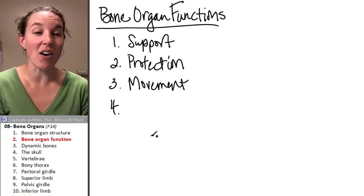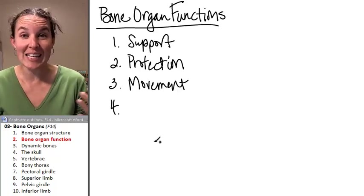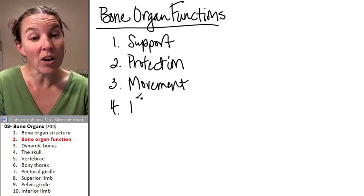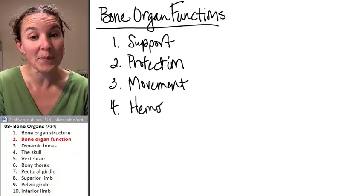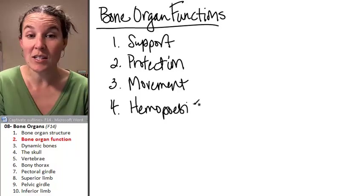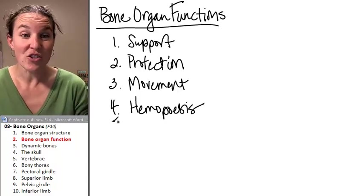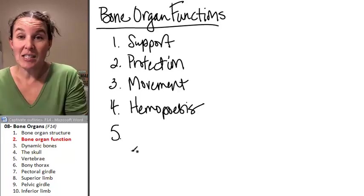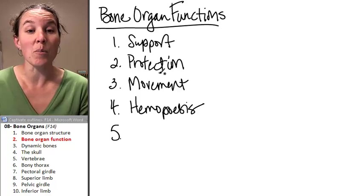Bone organs also, remember what kind of tissue we saw in the medullary cavity, in the bone marrow. They're involved in hemopoiesis, which is blood building. And we already talked about that. All those blood cells that are born in the bone marrow.